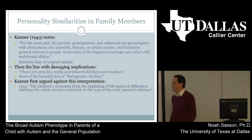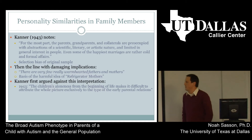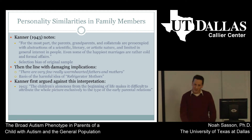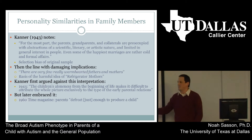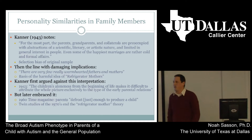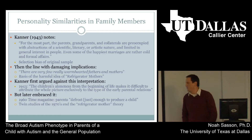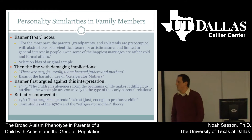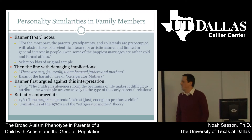To his credit, Kanner in that paper first argued against that interpretation. He wrote that 'the children's aloneness from the beginning of life makes it difficult to attribute the whole picture exclusively to the type of early parental relations.' Unfortunately, if you follow his work over the decades, he later embraces it. There's a 1960 Time Magazine interview with Kanner where he makes the really heartless point that parents 'defrost just enough to produce a child.' It really wasn't until the 1970s that the idea of refrigerator motherhood as a cause of autism was thoroughly debunked. There were several twin studies — one famous one by Michael Rutter — that demonstrated identical twins had high rates of autism between them, but non-identical twins were not likely to share the disorder, suggesting there had to be a strong biological component.